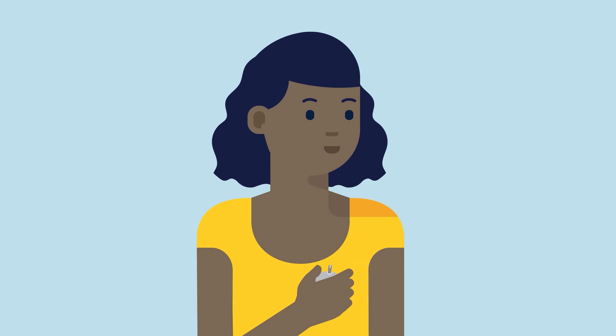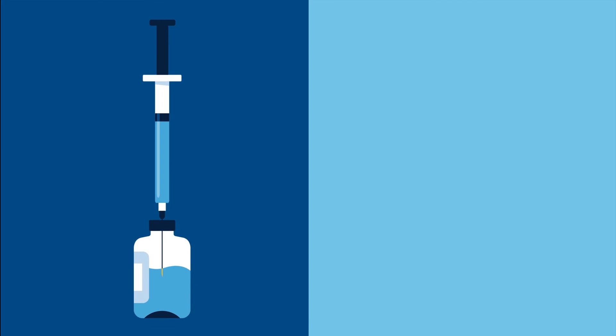Keep in mind, CGM does not replace BG meter readings. BG readings are still needed to keep your CGM system working properly. It is also necessary to confirm your sensor glucose with a BG reading before making any treatment decisions, such as giving insulin for a high BG or treating a low.